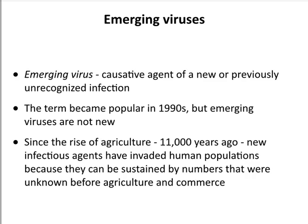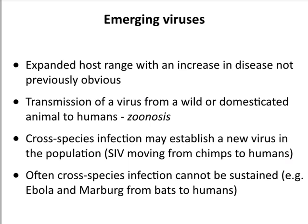What do we mean when we talk about emerging viruses? It can mean a number of different things. It could be an increase in the host range of a virus. It could be transmission of a virus from an animal to humans — wild or domesticated — and this we call zoonosis. Sometimes this kind of cross-species infection establishes a new virus in the population. HIV is a great example, originating from the virus known as SIV, which we'll talk about in detail next week.